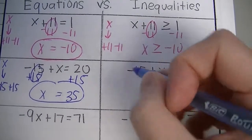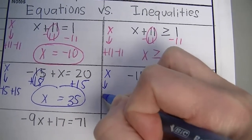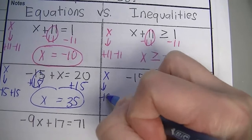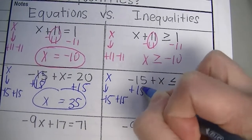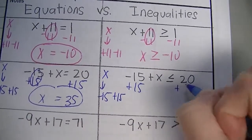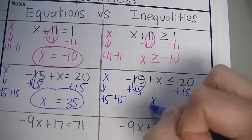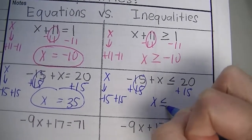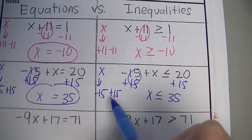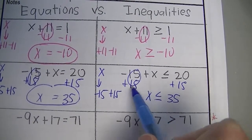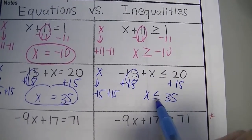Next, there's an inequality. Do the same thing — subtract 15 first, so now you add 15 to both sides. Negative 15 plus 15 is 0, so x is less than or equal to 35. All we did was add 15 to both sides. We didn't do anything with the inequality sign — it just stays consistent.